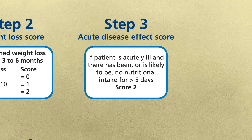Step three: acute disease effect score. This is looking at your patient's current medical condition. For patients who are acutely ill and there has been or is likely to be no nutritional intake for five days or more, a score of two would be added at this point. However, this is most likely going to apply to patients in hospital, as if you are in a community setting and your patient is acutely ill and has had or is likely to have no nutritional intake for five days or more, they need to be sent to hospital.